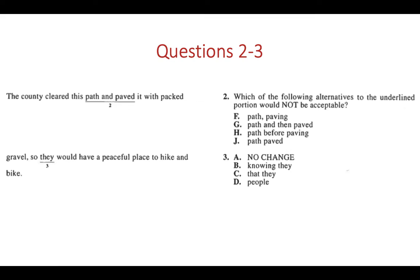Question 2: 'The county cleared this path and paved it with packed gravel.' The comma works because you could read 'the county cleared this path' on its own — 'paving it with packed gravel' is just added information. 'The county cleared this path and then paved it with packed gravel' makes sense. 'Before paving it with packed gravel' makes sense. But 'The county cleared this path, paved it with packed gravel' without a conjunction doesn't work grammatically.